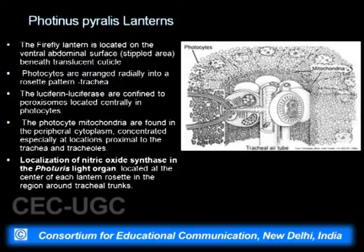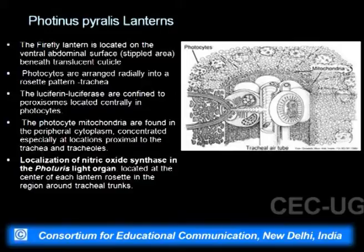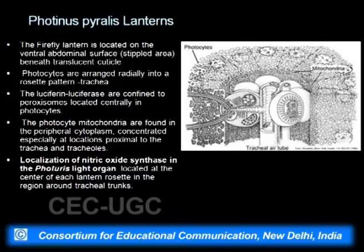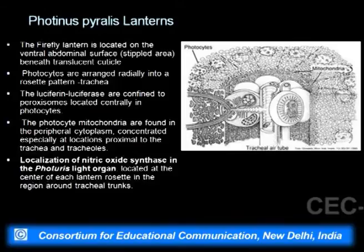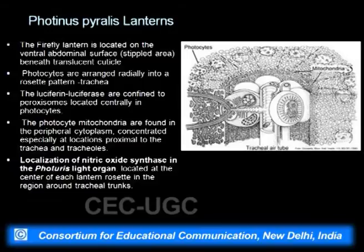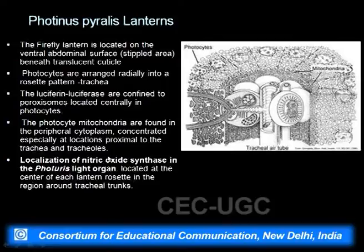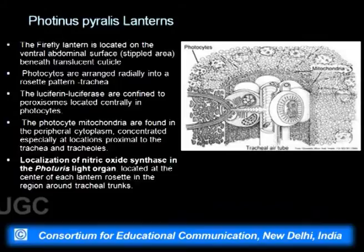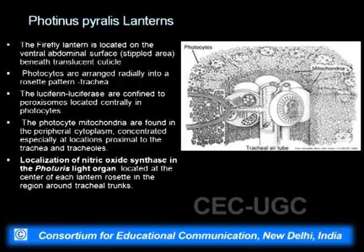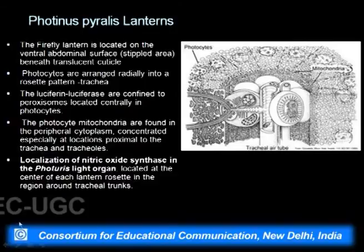In insects oxygen uptake occurs via the trachea, and the bioluminescent mechanism requires oxygen. The photocytes are present in a rosette shape around the trachea. Mitochondria are present near the trachea and peroxisomes are present towards the outside, where luciferin and luciferase are located. Nitric oxide synthase is a very important enzyme in this organ, located at the center of each lantern rosette. If there is an artificial surge of nitric oxide in the environment, the firefly starts flashing frequently. Nitric oxide acts as a neurotransmitter regulating how flashes occur, and these flashes relate to the mating dance for mate selection.